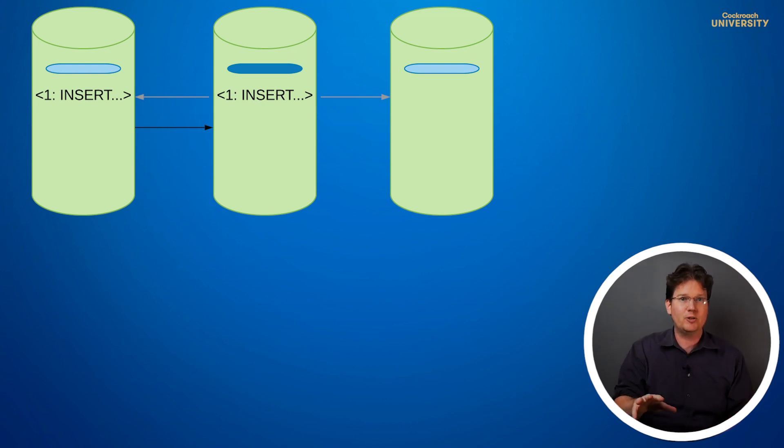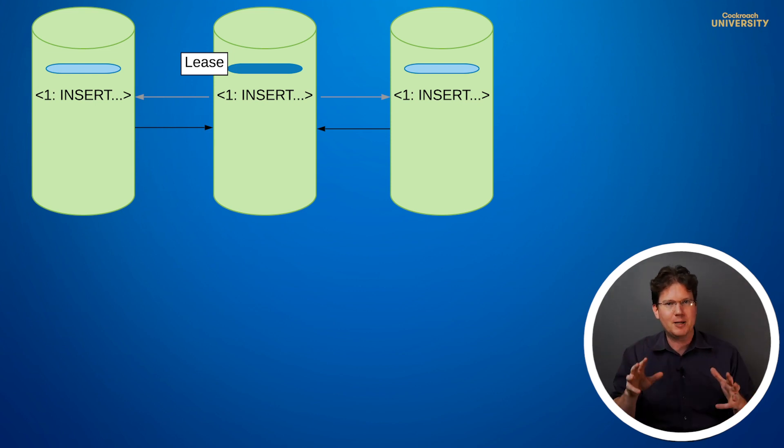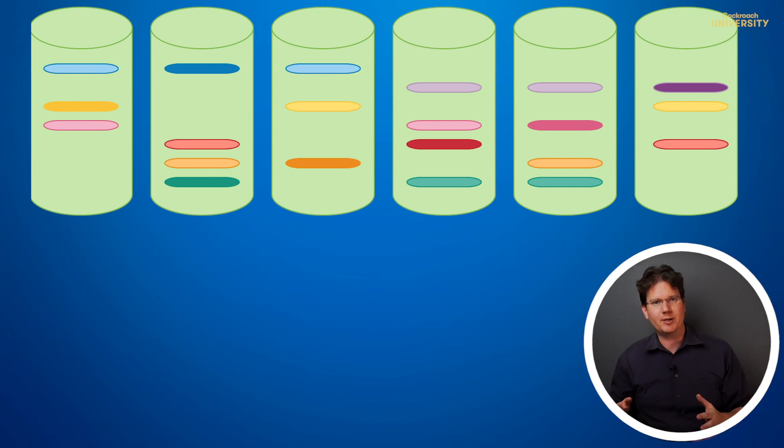Eventually, that write will go to every replica. Let's look at our full cluster, with a leader for each range, to get a big picture sense of things. Here, each range has one replica that's its leader and its leaseholder. All SQL operations are routed to the appropriate leaseholders. Reads are returned, while writes are passed to the leaders to start building consensus.